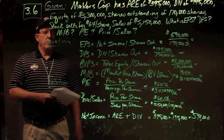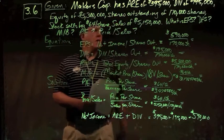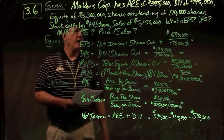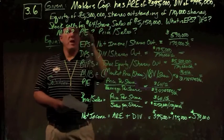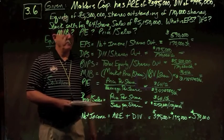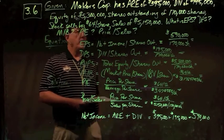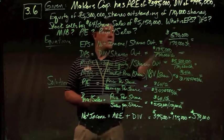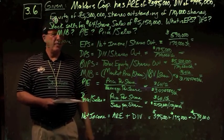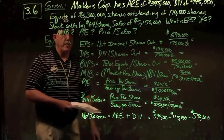In problem 3.6, we have Maker's Court with additions to retained earnings of $395,000, dividends of $195,000, equity of $5.3 million, shares outstanding of 170,000, stock selling for $64 a share, and sales of $5.15 million. We're asked for earnings per share, dividends per share, market-to-book, P/E ratio, and price-to-sales ratio. I listed the equations and the solutions out to the right because there are so many requests.